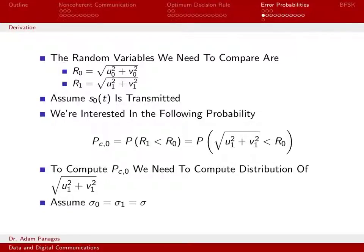Let's go ahead and derive the distribution of these random quantities that we need to evaluate the probability of error expression. The two quantities we're interested in are R0 and R1.